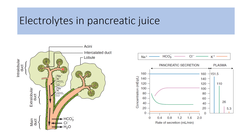Acinar as well as centroacinar cells secrete electrolytes inside the ducts. Ductal cells also secrete sodium, potassium, bicarbonate, and chloride. Ductal cells are of two types: extralobuloductal cells and main ductal cells. Extralobuloductal cells secrete sodium, potassium, bicarbonate, and chloride. In the main duct, reabsorption of bicarbonate and secretion of chloride occurs, along with reabsorption of water.